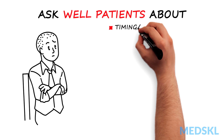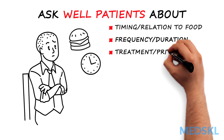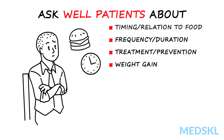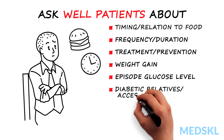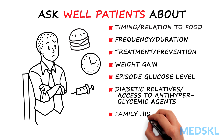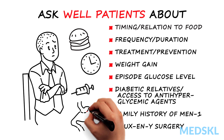In the seemingly well patient, ask about timing and relationship to food, frequency and duration, episode prevention and treatment, weight gain from eating to prevent hypoglycemia, blood glucose during an episode, relatives with diabetes or access to antihyperglycemic agents at home or work, a family history of multiple endocrine neoplasia type 1, and previous Roux-en-Y surgery.